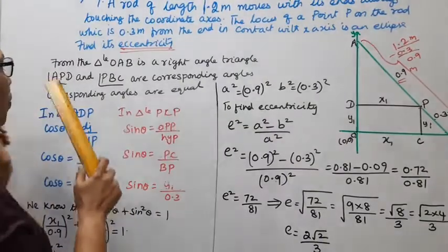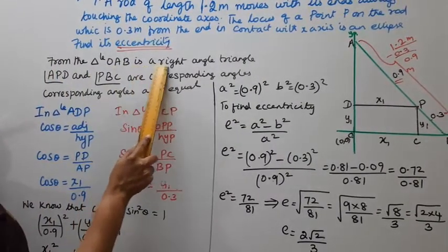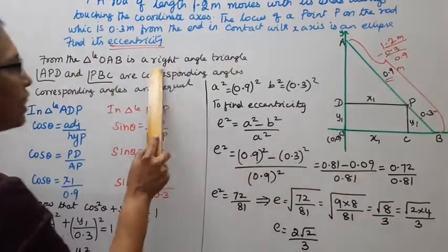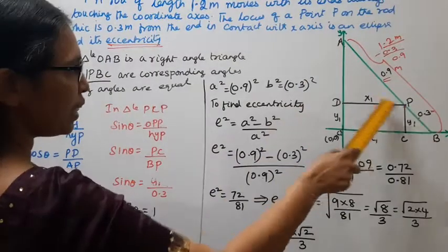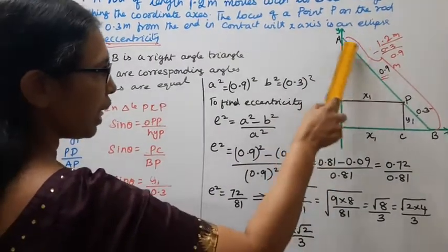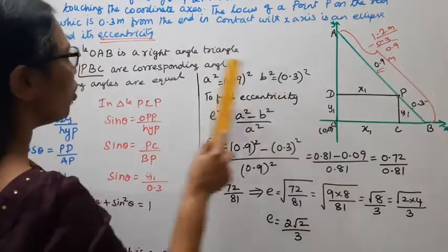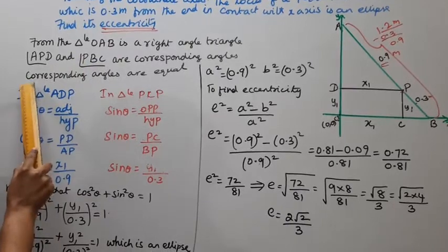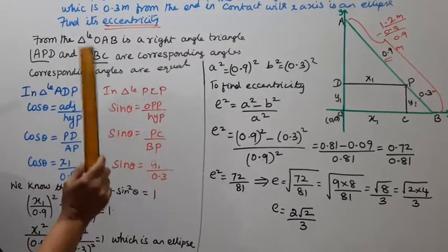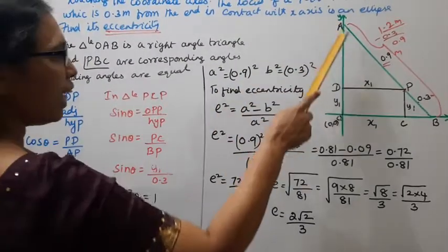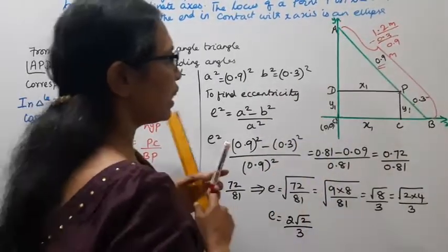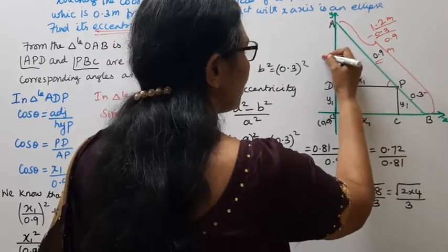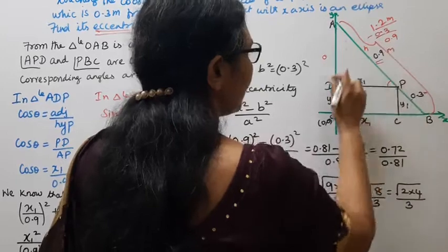From the triangle OAB, which is a right angle triangle, APD and PBC are corresponding angles which are equal. In triangle ADP, this is theta. This is the opposite side, this is the adjacent side, this is the hypotenuse.